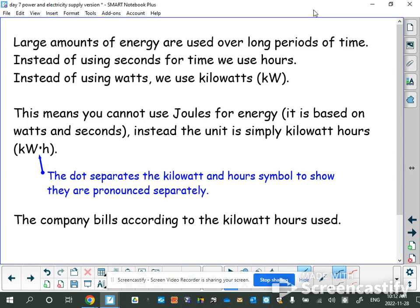Instead of using watts, they use kilowatts - thousands of watts. If they went down to single watts, you wouldn't even pay a penny. So they count in kilowatts instead. This means you can't use joules for energy anymore because joules are based on watts and seconds. Instead we use a new unit based on hours and kilowatts - the kilowatt hour (kW·h). They put a dot to show kilowatt and hours are two different things pronounced separately. The company bills you according to the kilowatt hours used based on the hours within that month and the kilowatts you used during that time.